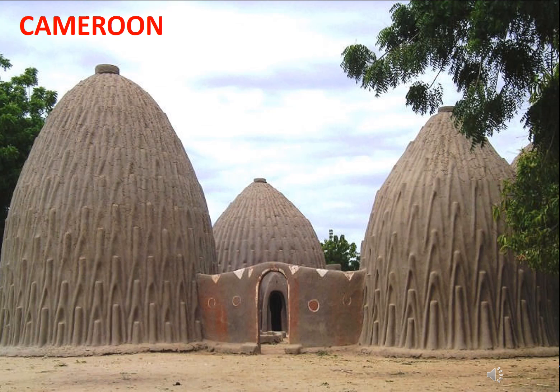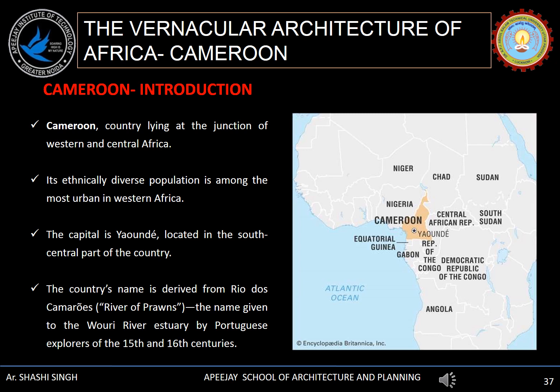These are the vernacular buildings of Cameroon called Obos. Cameroon is the country which lies at the junction of western and central Africa. Its ethnically diverse population is among the most urban in western Africa. Its capital is Yaounde. The country name is derived from 'Rio dos Cameroos', which means river of prawns.